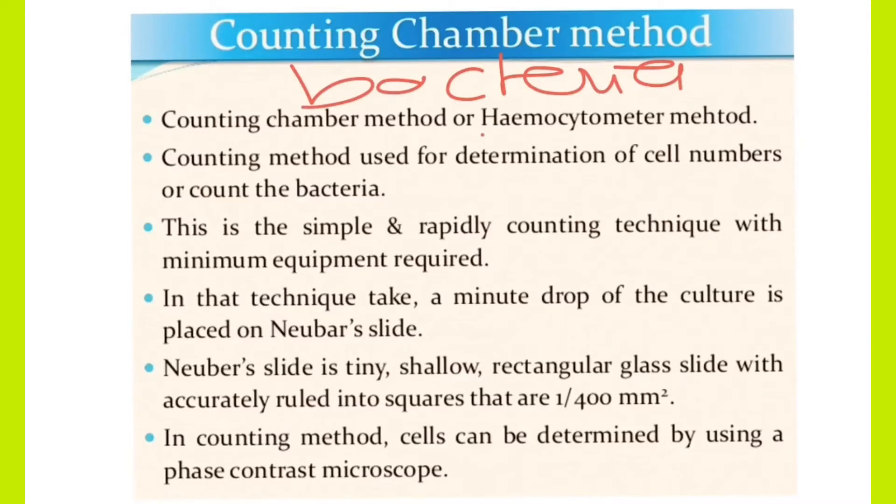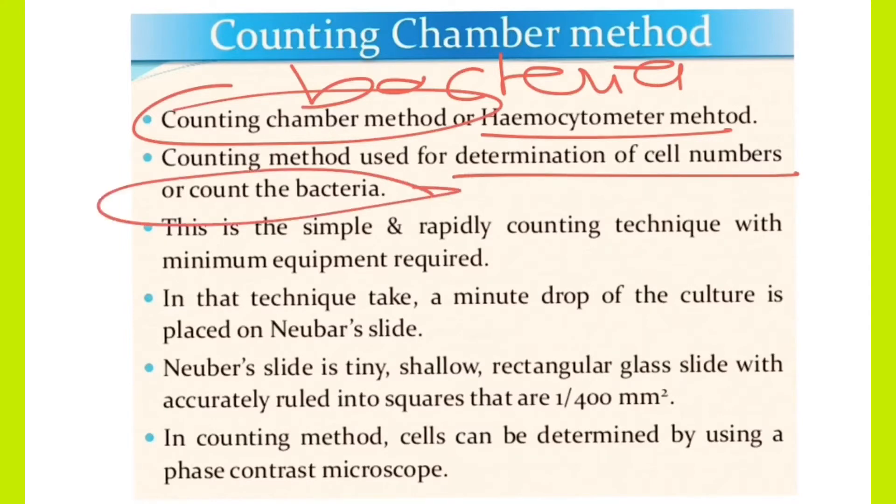The method is called the Hemocytometer or counting chamber method. Counting of the determination of the bacterial cells or count of bacteria one by one. This is very simple, rapidly without using any extra equipment.